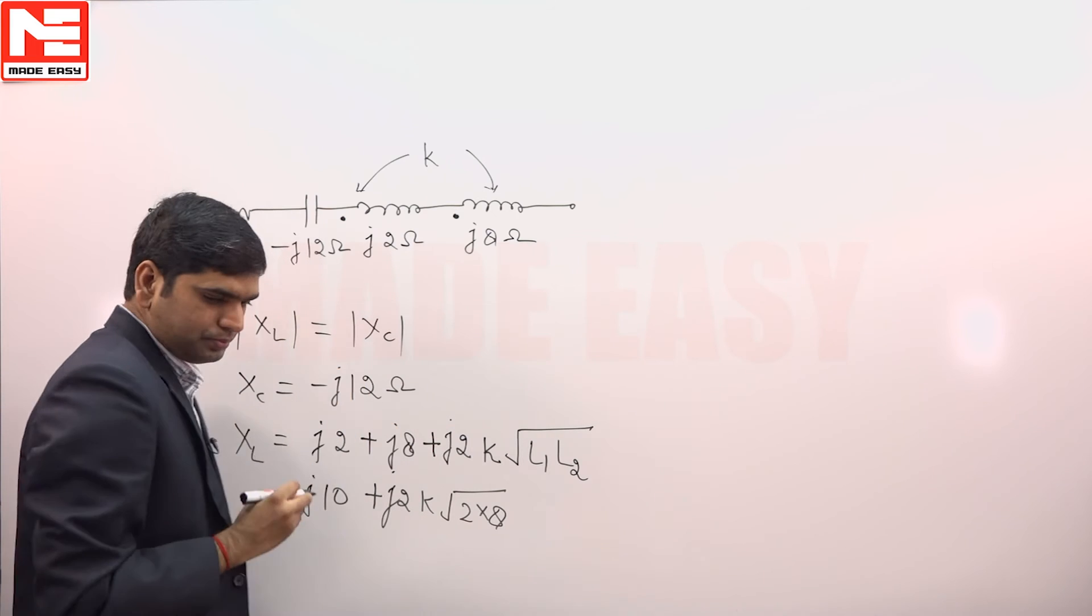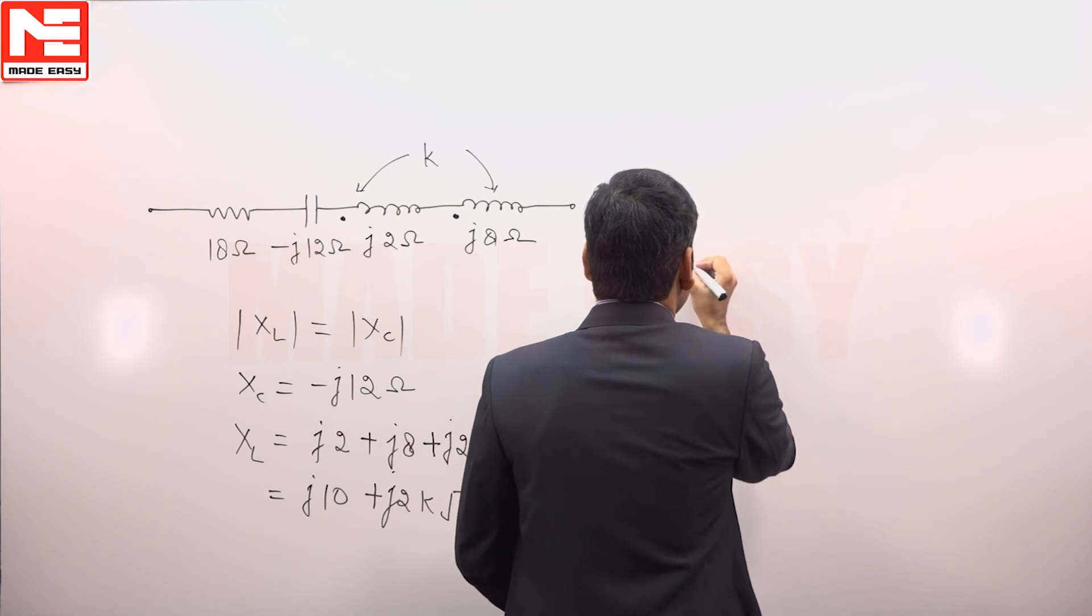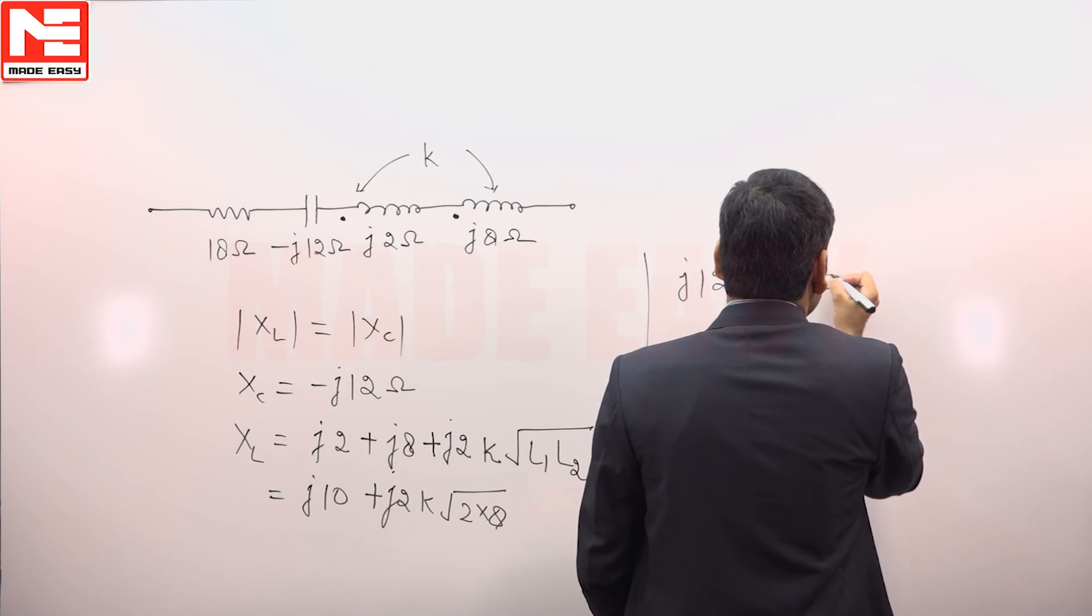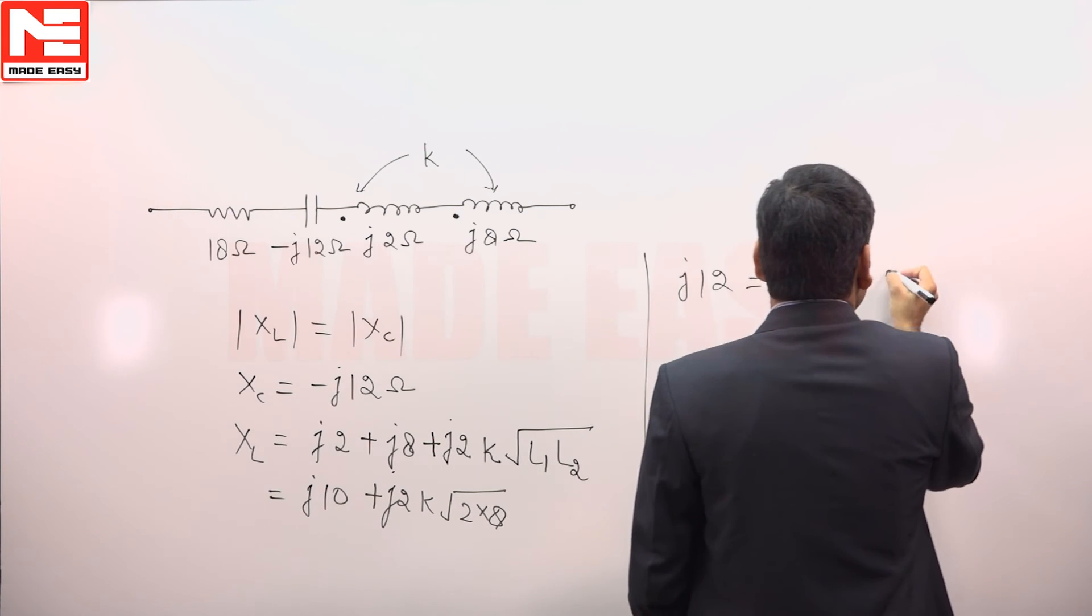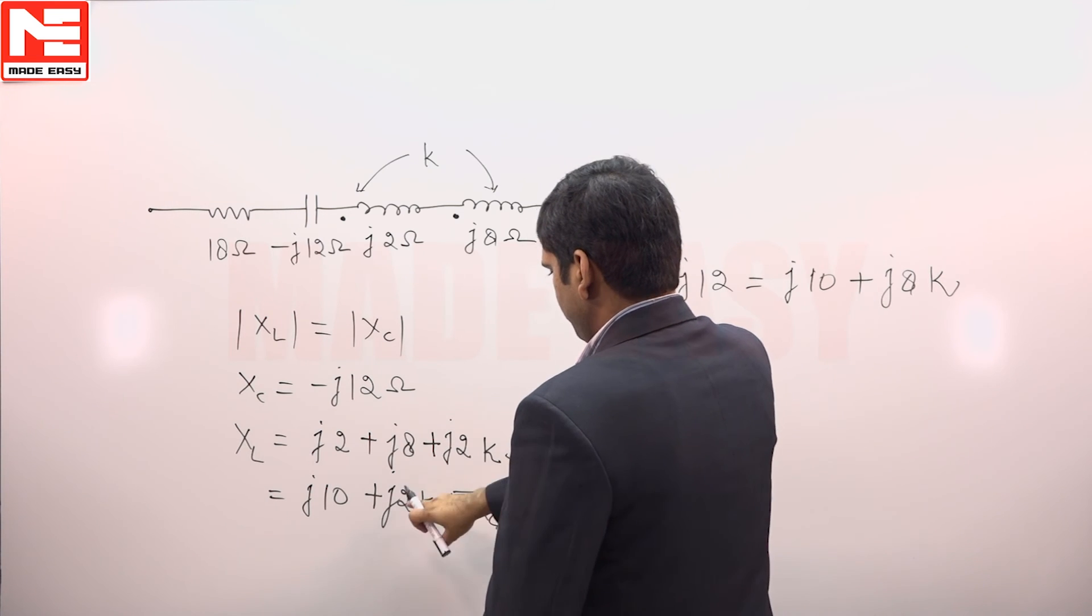So on solving from here, k is equal to 2 by 8, which is equal to 0.25, given in option C.